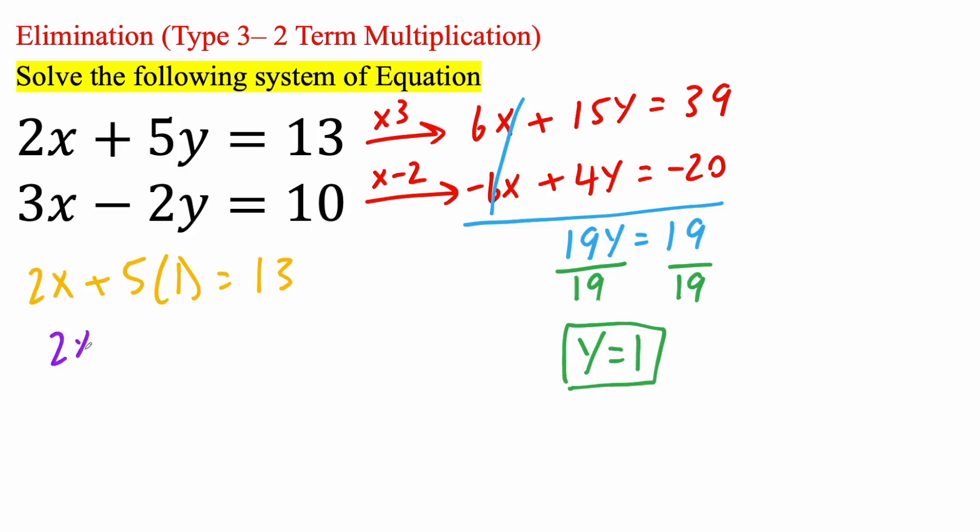So, next, we can expand. We get 2x plus 5 times 1 is 5 is equal to 13. And if we want to get rid of the plus 5, we got to subtract 5 on both sides. And so, we're going to get 2x is equal to 13 minus 5 is 8.